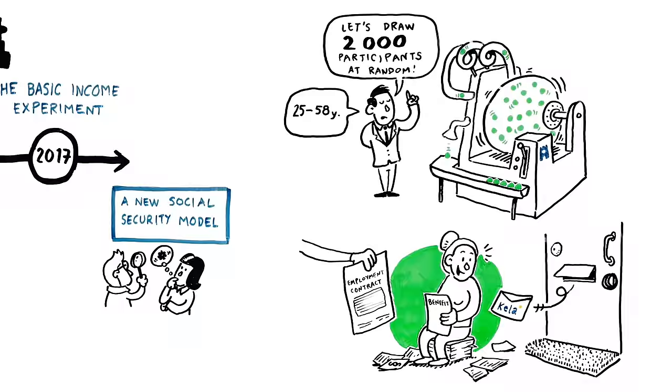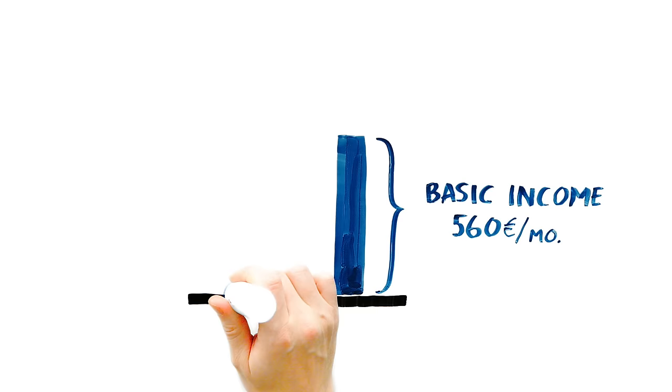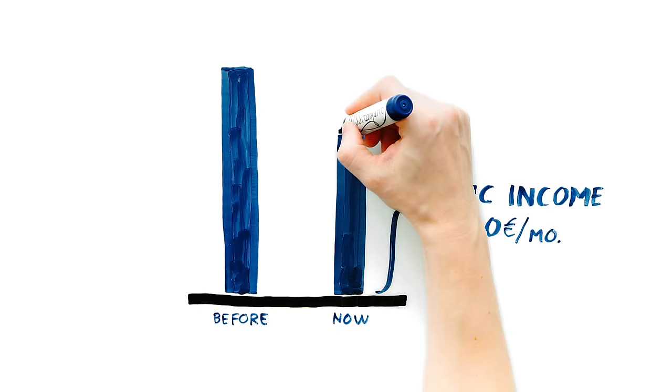During the experiment, the participants receive a basic monthly income of 560 euros. For example, should the unemployment benefit of the participant be higher than the Basic Income, the participant can apply for the exceeding amount from Kela.